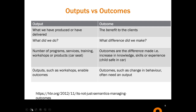Outputs are things you can put a number on — number of programs, services, trainings, workshops. Outcomes are the difference made by these things. For instance, children safe in a car is the outcome you'd hope from a car seat. Attending a parenting program — you'd hope they've increased their knowledge, skills, or experience. But you need both. You need an output to enable an outcome — you need to do something. And an outcome such as a change in behaviour often needs an output — something has happened.